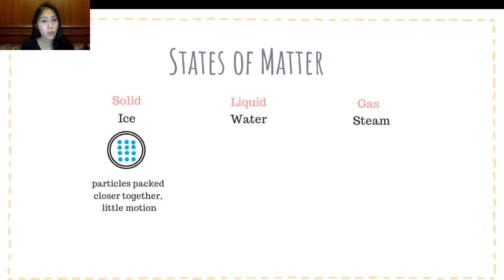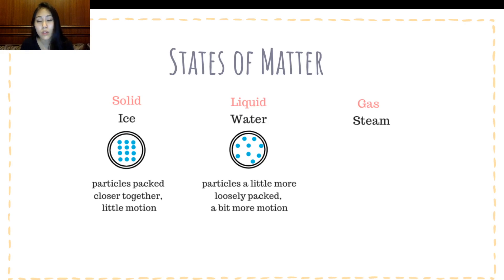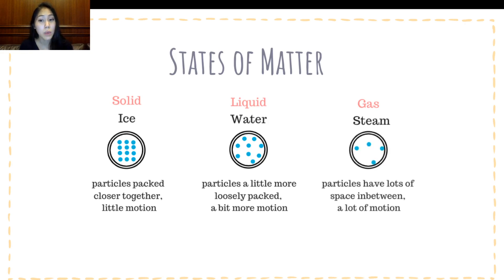The first microscopic view is looking at a solid. In a solid, the particles are packed closer together, so there's very, very little motion. Compared to water, water is a lot more loosely packed when we compare that with ice, so there's a lot more motion. It's a lot more loosely packed — we have water that's a lot more flowing and ice cubes that are confined to whatever container you put them in. In steam, particles have a lot of space in between, so there's a lot of motion.